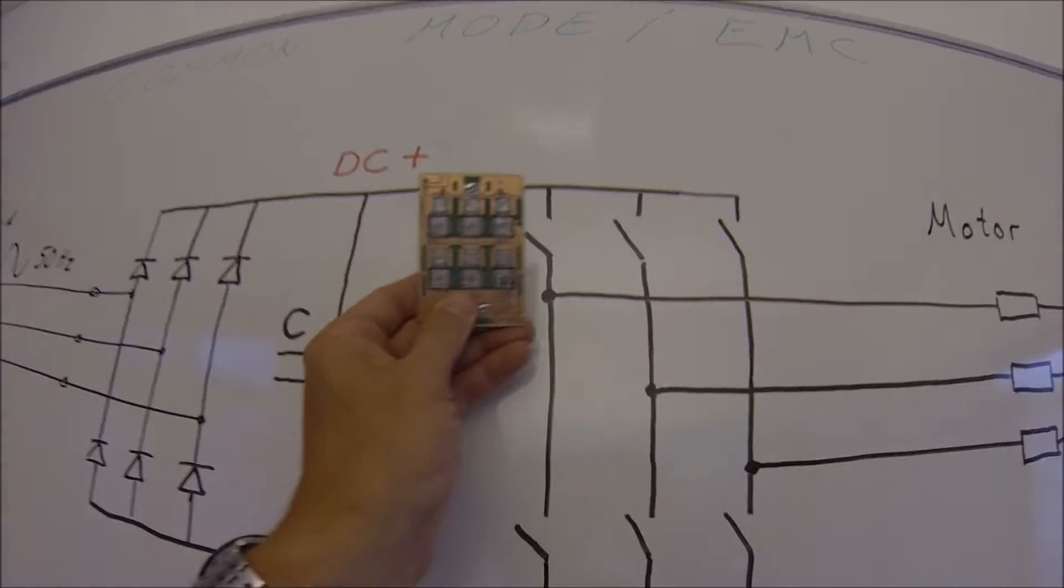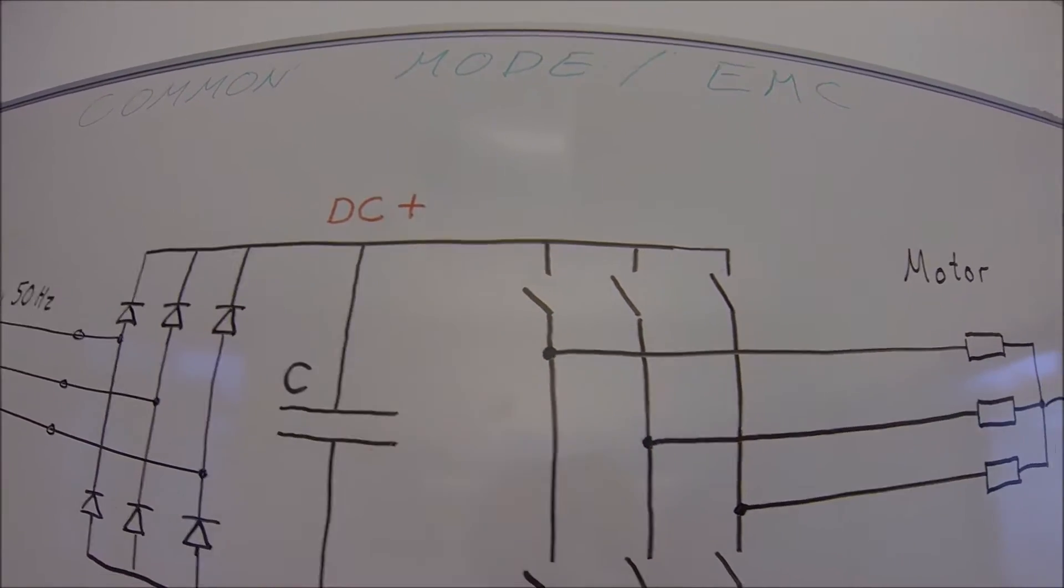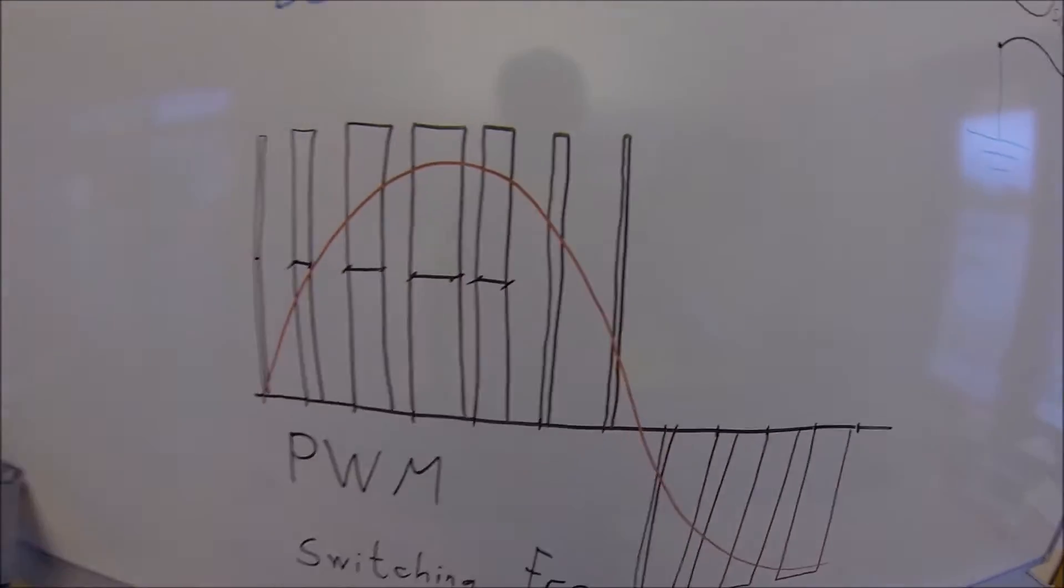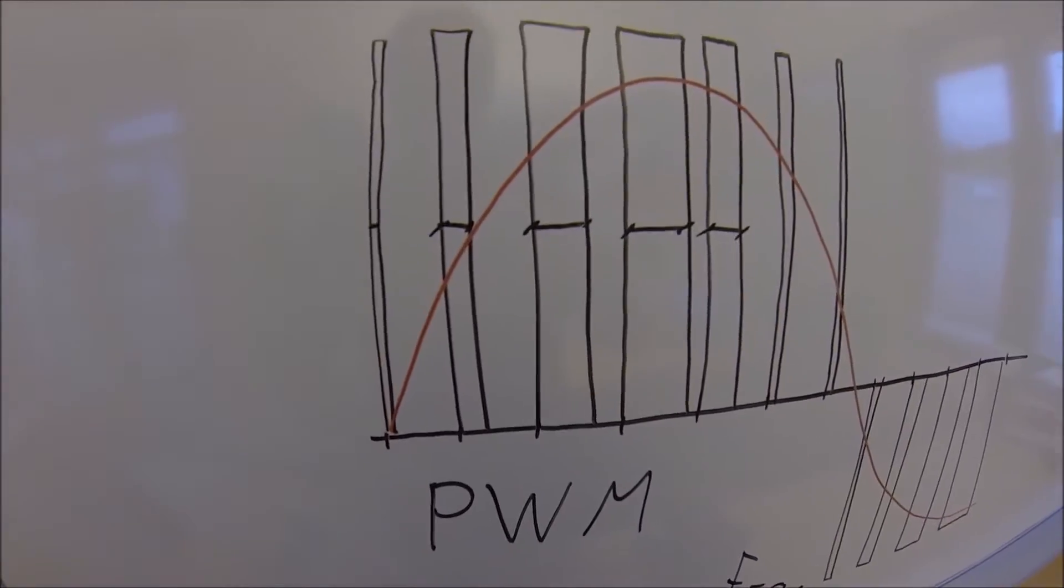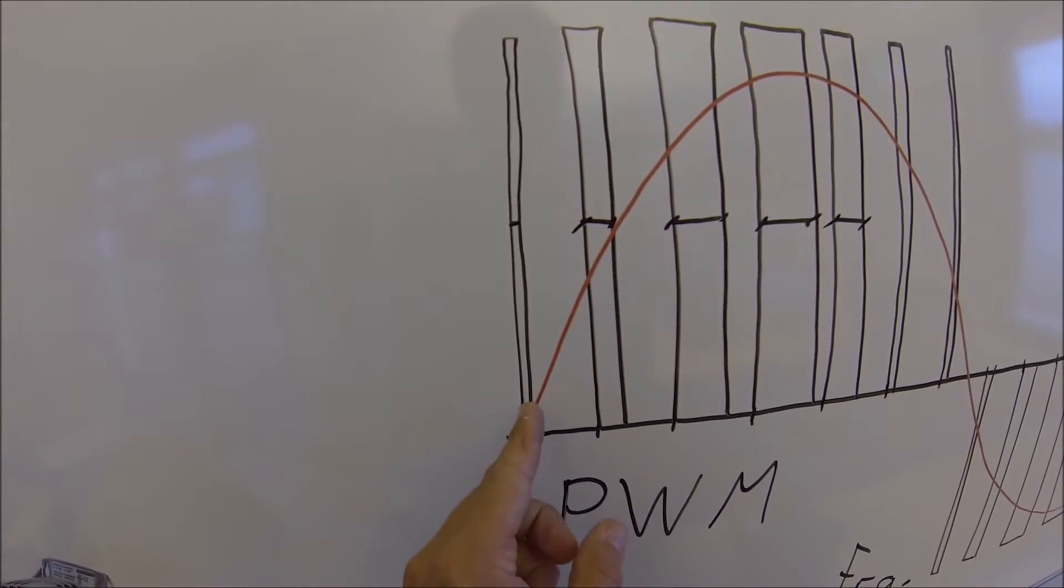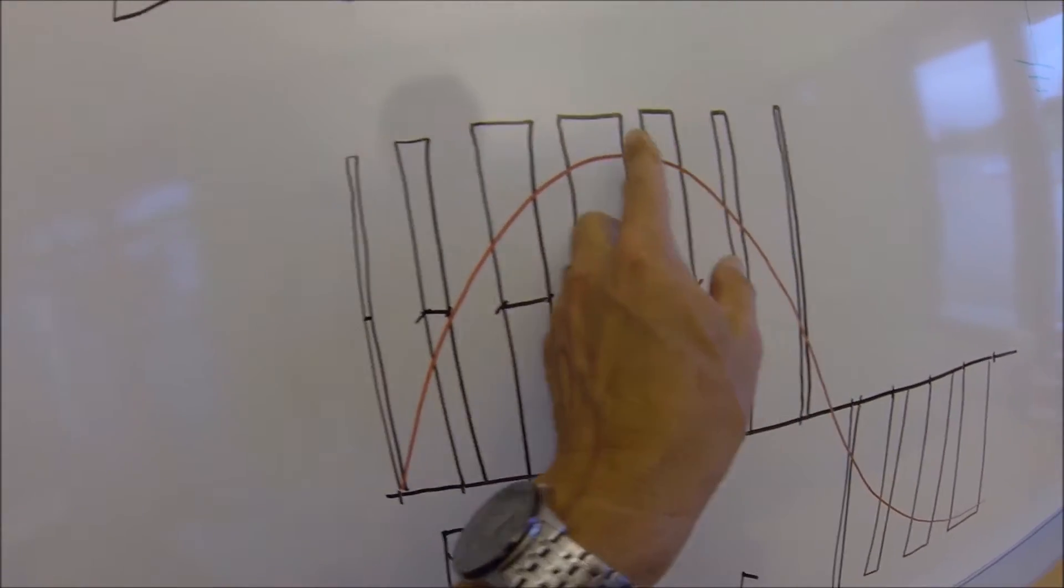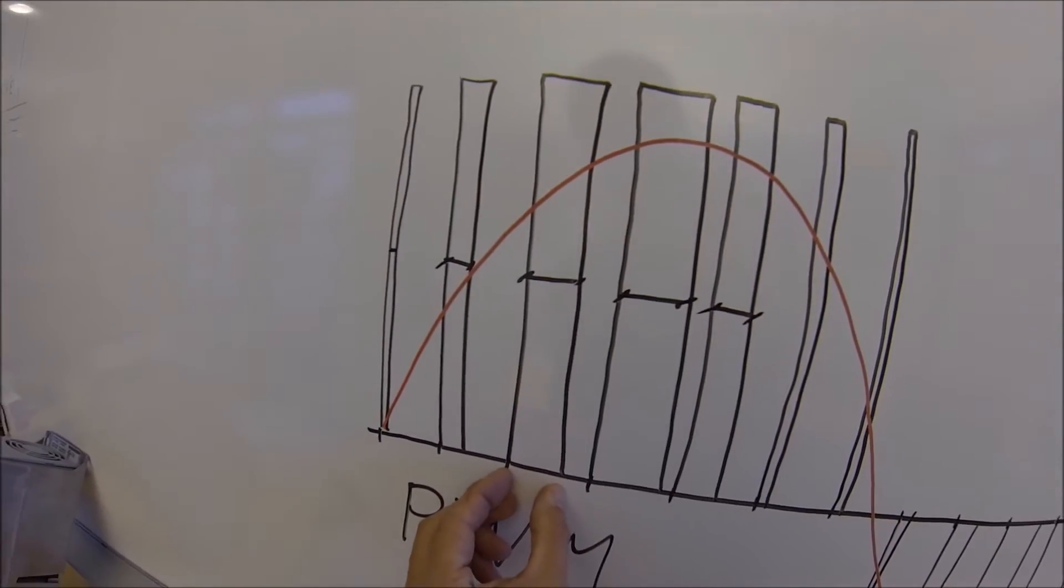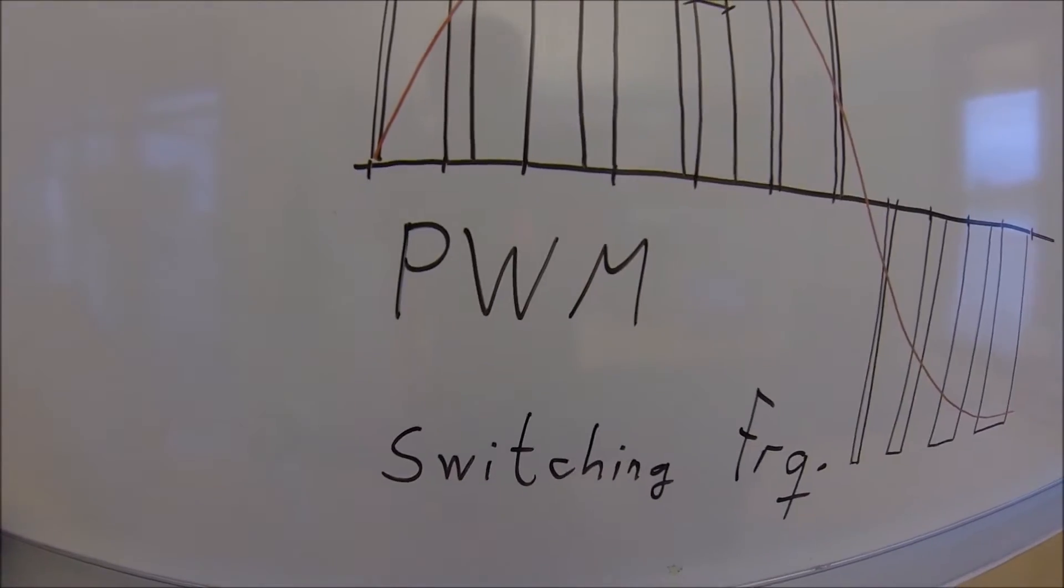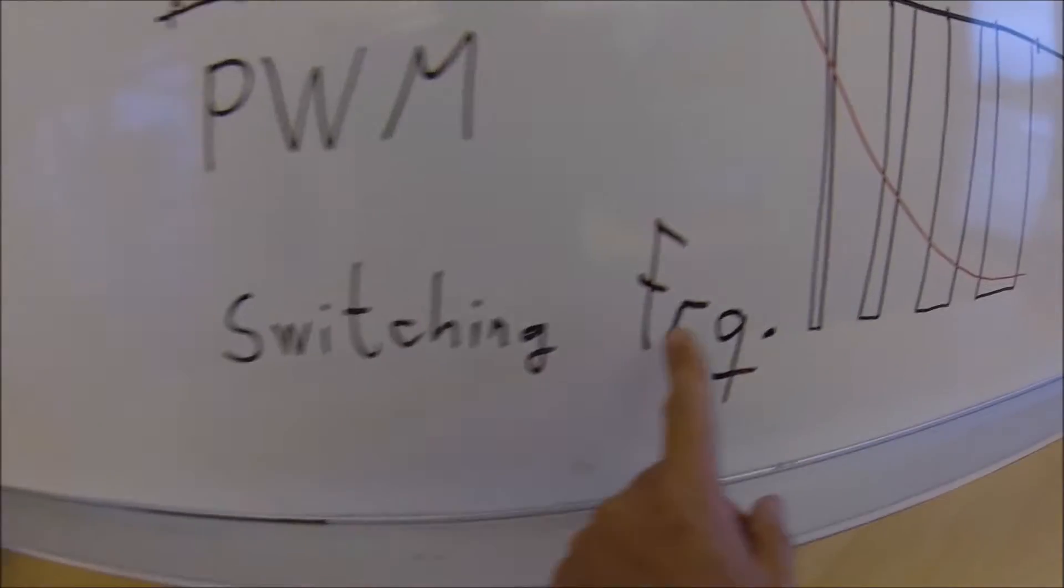Of course these transistors can only be turned on and off so to produce a beautiful nice sinus we have to do it in a little bit primitive way. What we do we turn on these IGBTs for a very short time when we want the sinus to be small. And the bigger part of the sinus, the fat parts, we increase the width of the pulses. This is called pulse width modulation and every time we do this, this is the switching frequency.